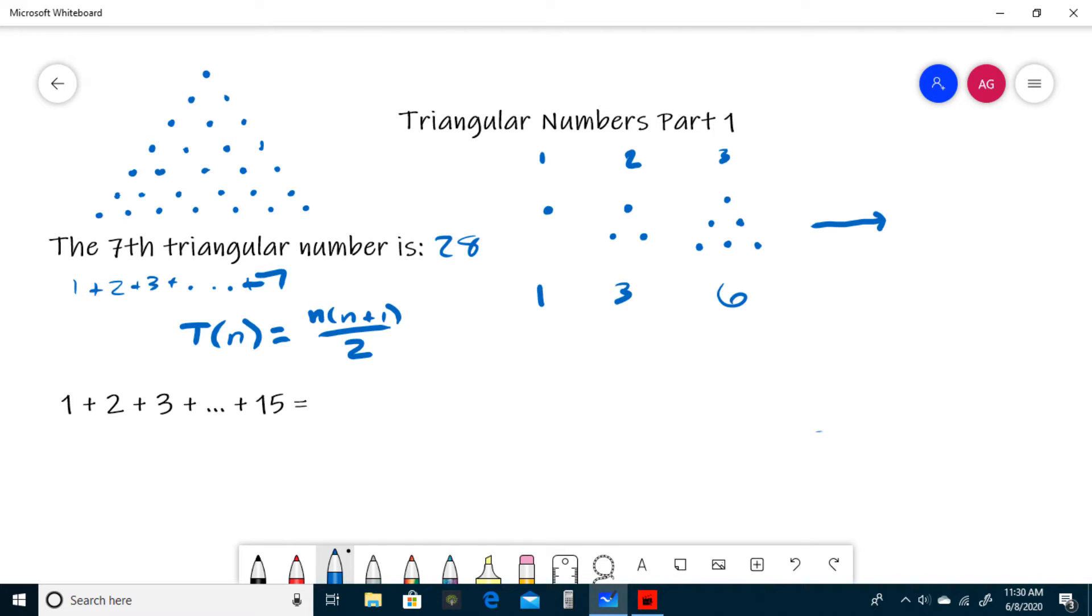To recap, first use this formula: T(n) equals n times n plus one divided by two. n is just the nth triangular number, so in this case we have seven. Plug seven into this formula—you're going to become very familiar with this. n times n plus one divided by two: seven times eight divided by two is 28. So your seventh triangular number is 28.